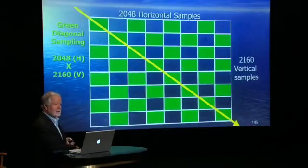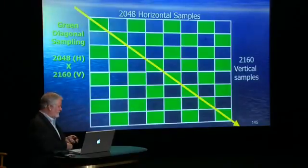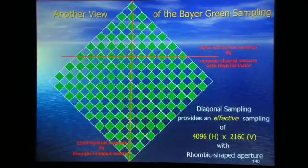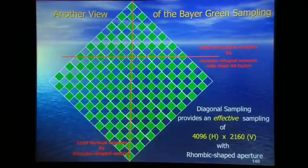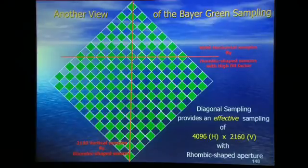Bear is very clever — what Bear really is is diagonal sampling. Look at that sensor and just turn your head 45 degrees, and you'll see what the trick is. Those pixels that had gaps between them when viewed horizontally and vertically — if you look at them diagonally, you've got a continuous stream of pixels. And you get 4096 pixels back again horizontally, and vertically you've got the full 2160 pixels.